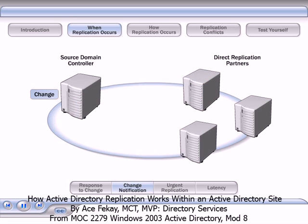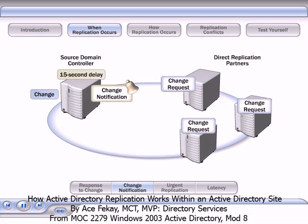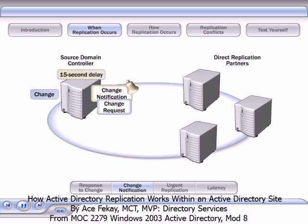When a change occurs on a source domain controller, a delay occurs before the first direct replication partner is notified of the change. By default, this interval is 15 seconds on Microsoft Windows Server 2003 domain controllers. Additional direct replication partners are then notified at intervals of 3 seconds. This delay staggers the replication traffic and improves performance by ensuring that the source domain controller is not overwhelmed with simultaneous update requests from multiple replication partners.